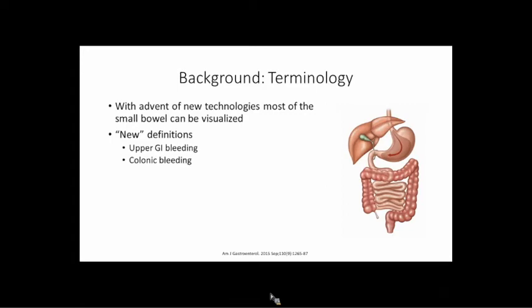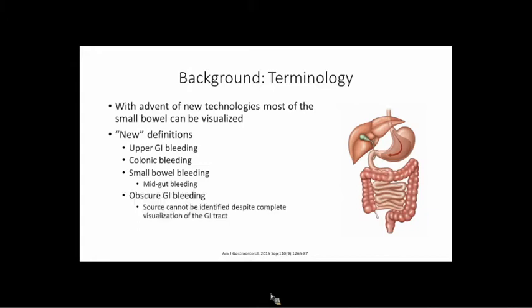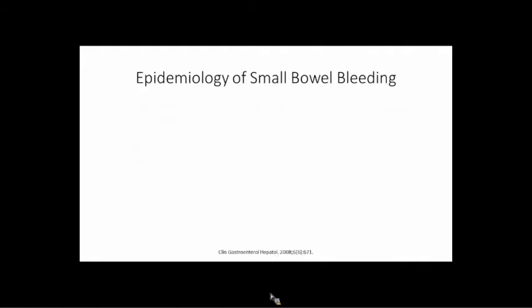Upper GI bleeding is now defined as anything within the reach of an upper endoscope, colonic bleeding within the reach of a colonoscope, and small bowel or midgut bleeding. Obscure GI bleeding should really be reserved for cases where a source can't be identified despite looking at the entire GI tract with these different modalities. For this talk we'll focus on small bowel bleeding.